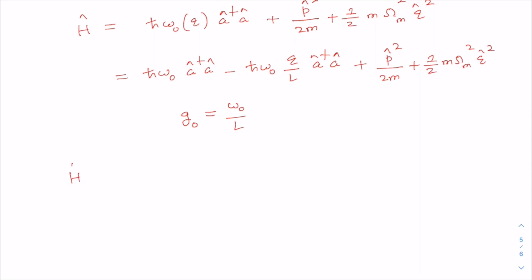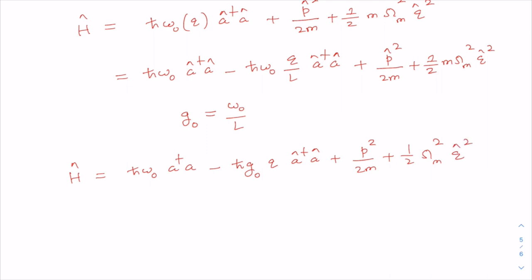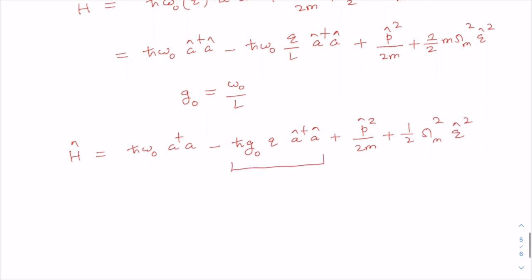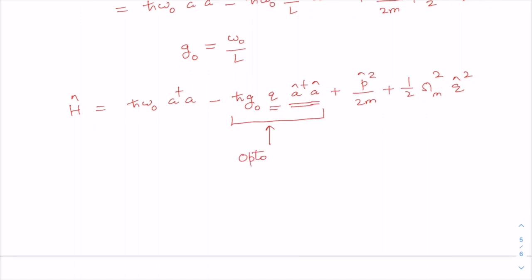This particular term, proportional to the number of photons a†a multiplied by the mechanical amplitude q, describes the optomechanical interaction. We can write the Hamiltonian in another form: H = h-bar*omega_0*a†a + p²/(2m) + (1/2)*m*omega_m²*(q - h-bar*g_0*a†a/(m*omega_m²))² minus a correction term. This form clearly shows the displacement of the mechanical equilibrium due to the optical force.